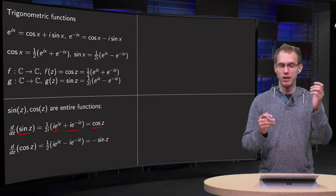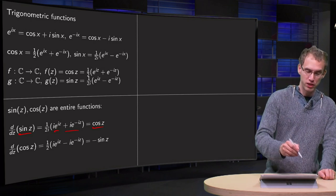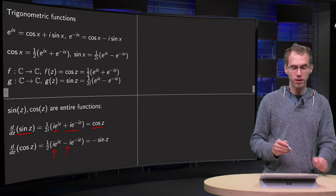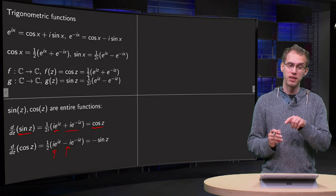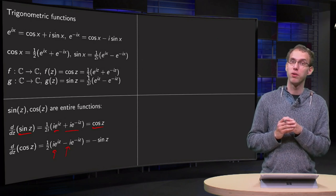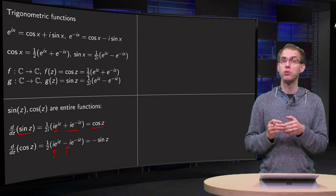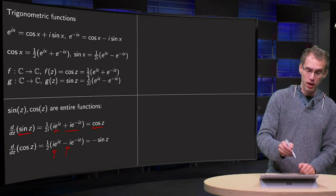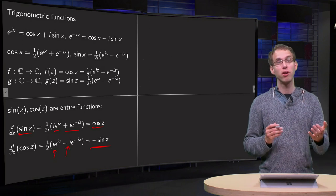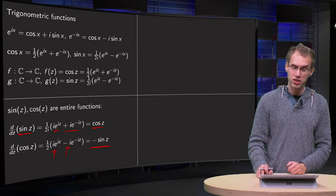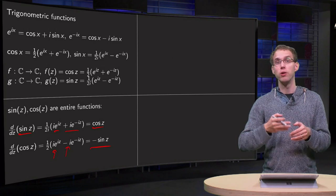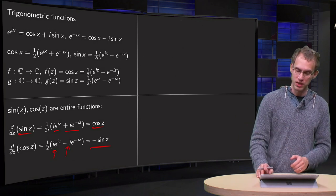So the derivative of sine is again just the cosine, as in the real case. What about the cosine? You can guess already. To differentiate the cosine you get an i over here and a minus i over there. You can take i out and get i over 2 times e to the power iz minus e to the power minus iz, and i over 2 equals 1 over 2i with a minus sign, so the derivative of cosine is again just minus the sine. The rules you know from real functions also hold here for the complex cosine and sine.